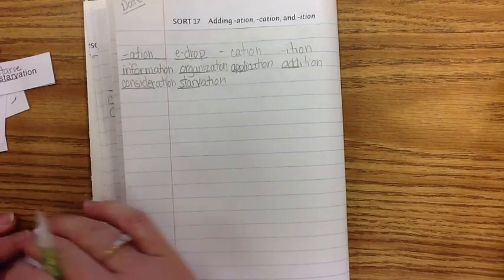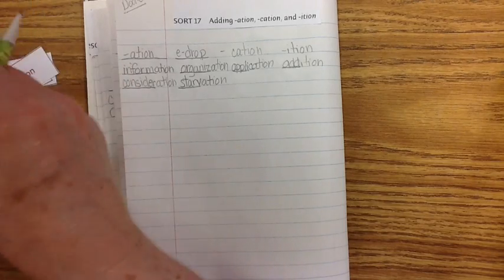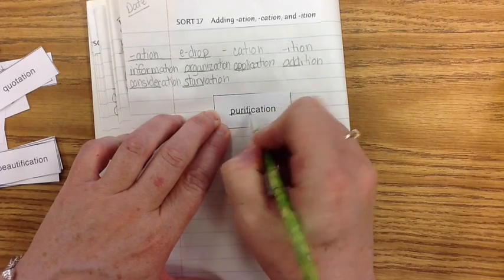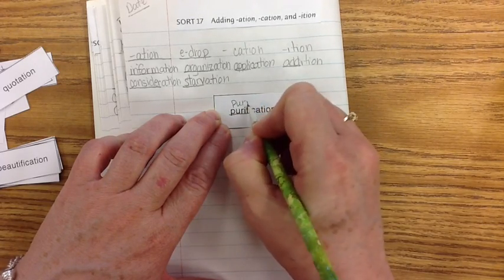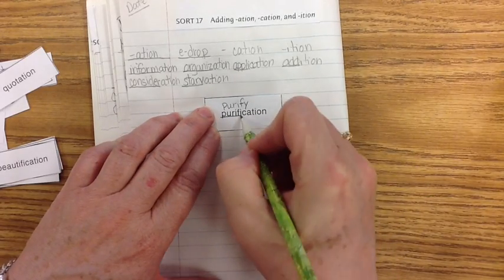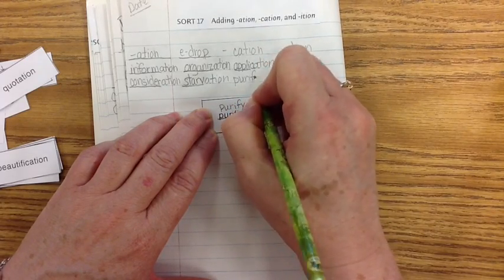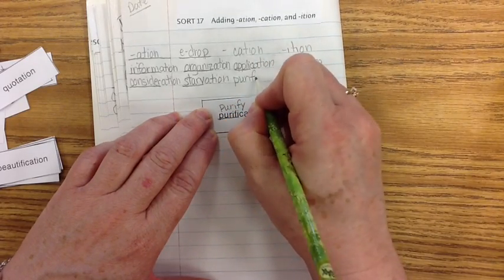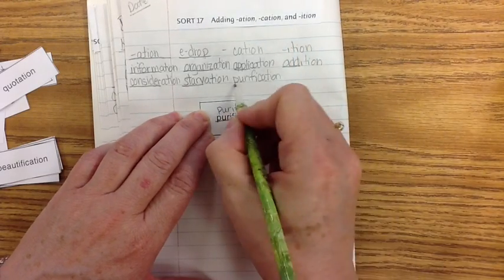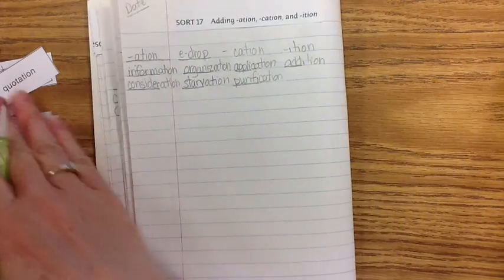Let's see if we can find one that has... there's another E. Purify. Let's do purify. Purify would be P-U-R-I-F-Y. So here's one where you have to change the Y to an I. So P-U-R-I-F, change the Y to an I. Purify. And then you have C-A-T-I-O-N. Purification.